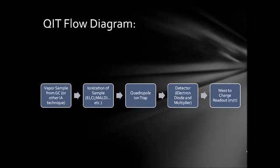Forms of ionization are the many common ones: EI, CI, MALDI. Electron impact is actually one of the most common ones I've seen paired with QIT.